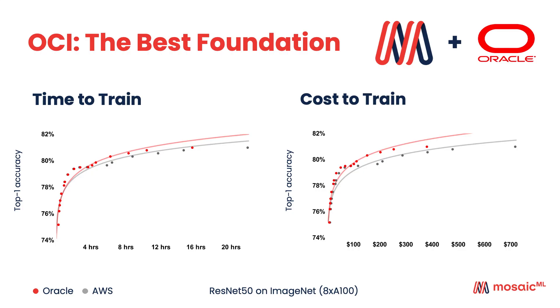We tightly integrate with OCI, and we've actually characterized this ourselves — we found that OCI is the best foundation. What you're seeing here is accuracy achieved over time on the Y-axis when training a neural network on a benchmark, with time on the left X-axis and dollars on the right. If you take data points near 80% accuracy and compare AWS versus Oracle, it's about half the time and half the cost. This is a tiny benchmark, so maybe you don't care about $200 versus $100 — but when it gets to $100,000 versus $200,000, companies tend to care a lot more.